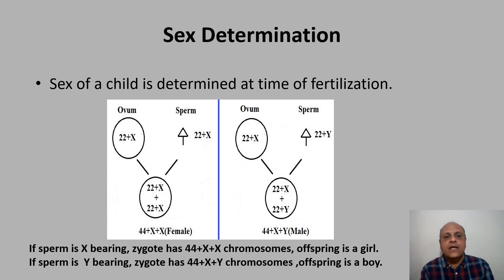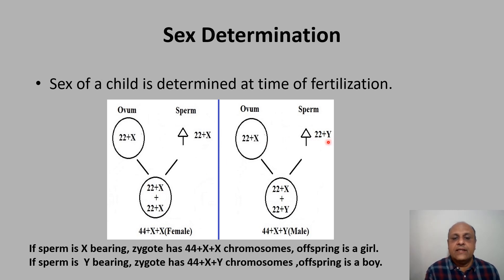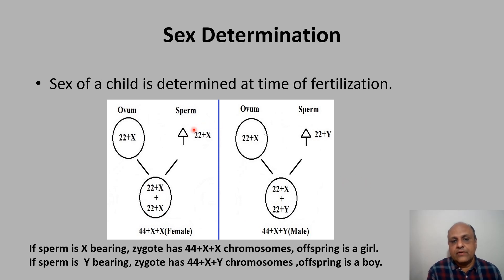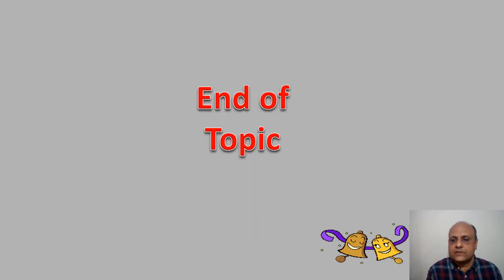Sex determination: the sex of a child is determined at the time of fertilization. If the sperm is Y-bearing, the zygote has 44+XY chromosomes and the offspring is male. If the sperm is X-bearing, the zygote has 44+XX chromosomes and the offspring is female. So whether the sperm is X-bearing or Y-bearing determines the sex at the time of fertilization. In the next class we will cover the uterine cycle and the ovarian cycle.